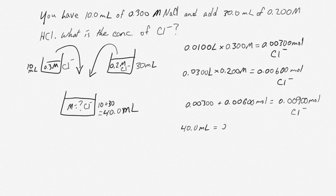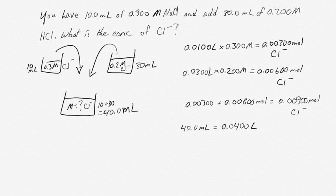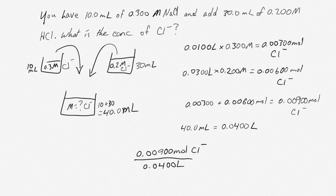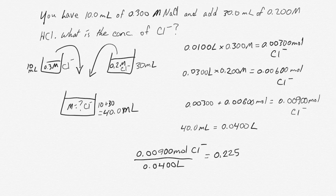Our total volume was 40 milliliters, which is 0.0400 liters. To find the new concentration, we divide 0.00900 moles of chloride ions by 0.0400 liters, and we end up with a concentration of 0.225 molar chloride ions.